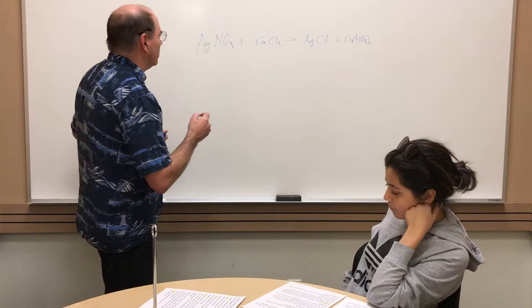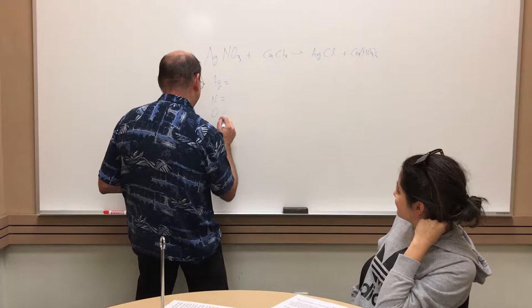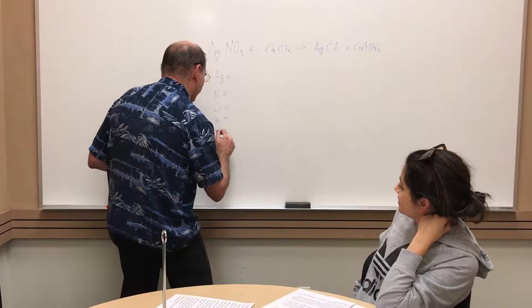So let's summarize what we have. Okay, so we have silver, we have nitrogen, we have oxygen, we have copper, and chlorine. Okay.